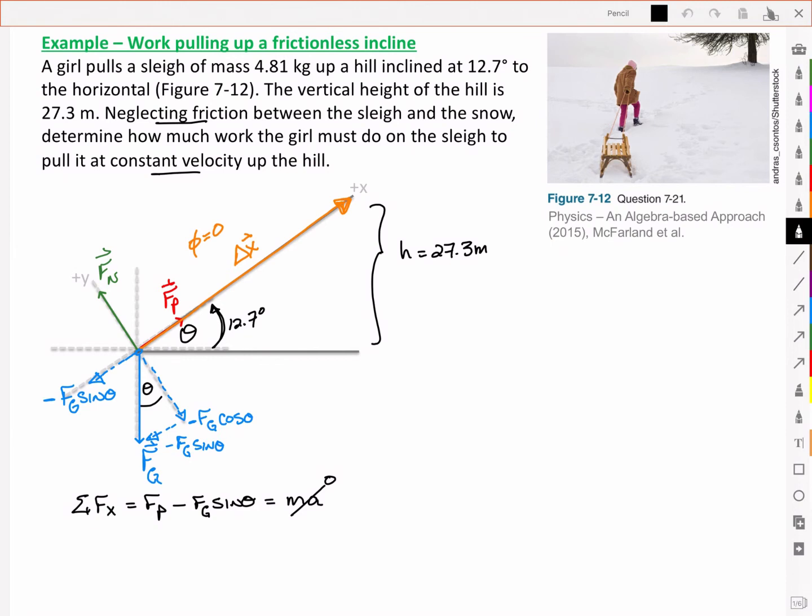This means now that I can solve for Fp, and so it's just the equivalent of Mg sin theta. So I've got 4.81 kilograms, 9.8 meters per second squared, and a sine of 12.7, which all gives me 10.36 newtons.